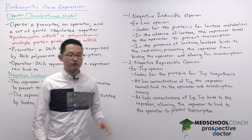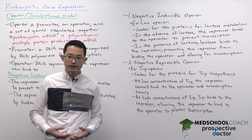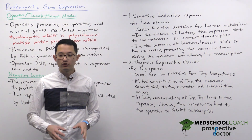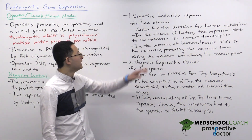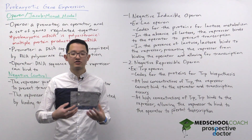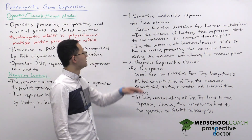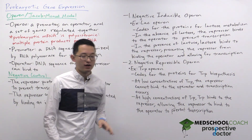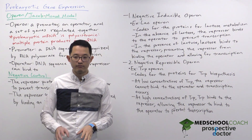Let's start with what is called the negative inducible operon. Negative means this involves negative control with a repressor protein. Inducible means this is an operon whose transcription can be turned on. A very good example of this is the lac operon, which you want to be familiar with for the MCAT.